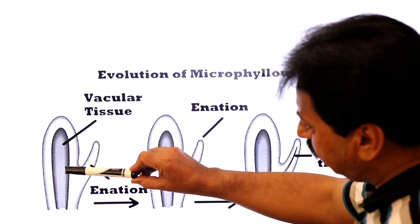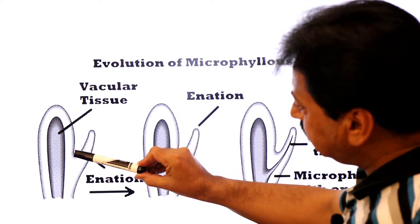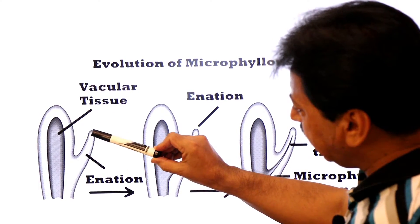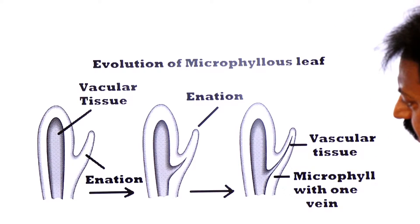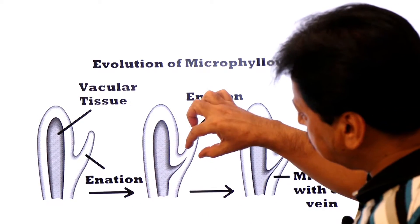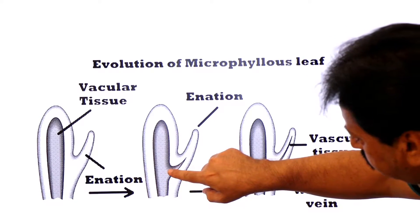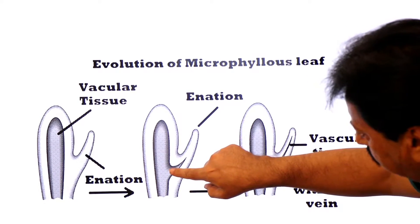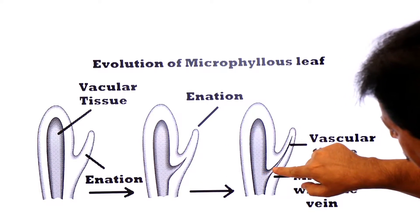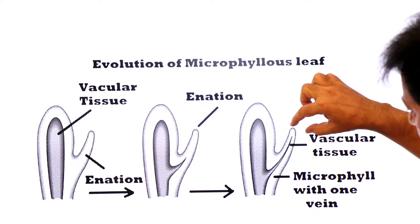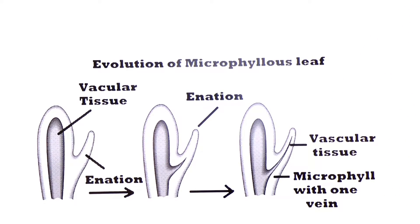In early plants, a small outgrowth called an enation emerged from the side of the vascularized stem. Vascular tissue develops in the enation — it is extended into the enation — and that creates a single-vein leaf, known as a microphyllous leaf.